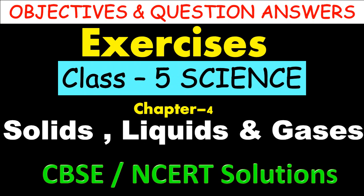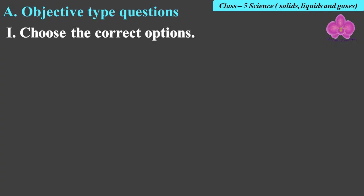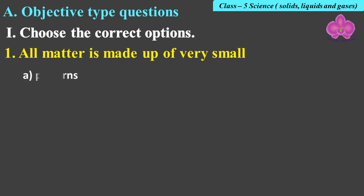Question number one: Choose the correct options. All matter is made up of very small... Options are: A. patterns, B. particles, C. substances, and D. gases. Answer: B, particles.